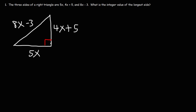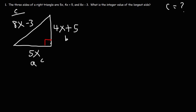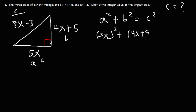The longest side is the hypotenuse. Let's call the first leg A and the second one B — it doesn't matter which is A or B, what matters is C. C is the hypotenuse, the longest side, so C is 8x minus 3. Our goal is to find the integer value of C. Starting with the Pythagorean theorem: A squared plus B squared equals C squared, where A is 5x, B is 4x plus 5, and C is 8x minus 3.